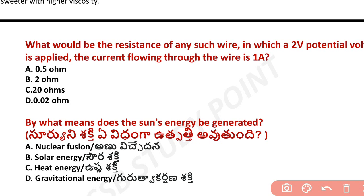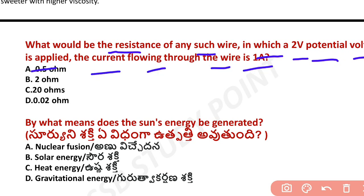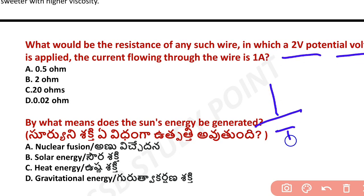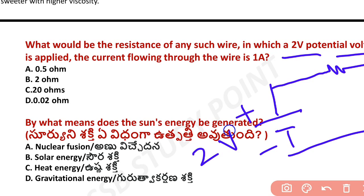Next question: what would be the resistance of a wire in which 2 volt potential difference is applied and the current flowing is 1 ampere? If you studied the previous classes on series and parallel connections and electrical circuits, one or two questions on this topic will definitely appear in the exam.